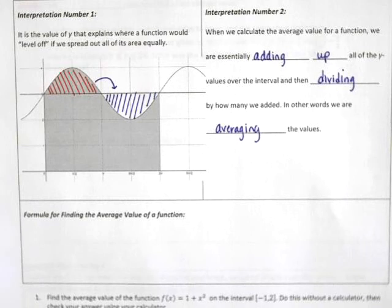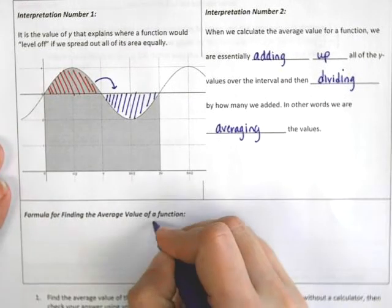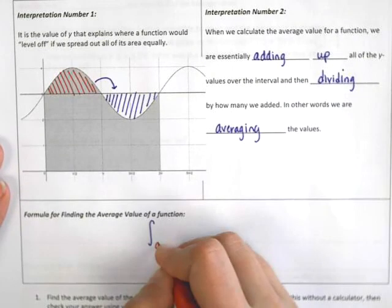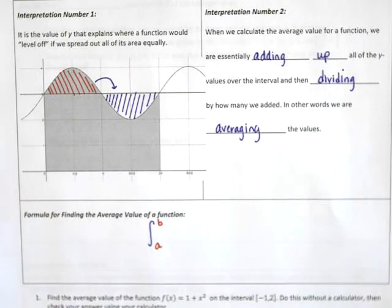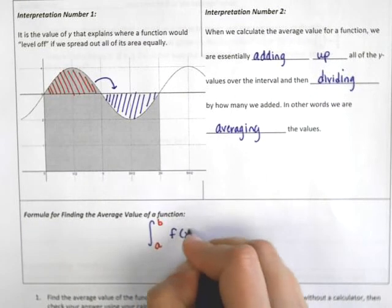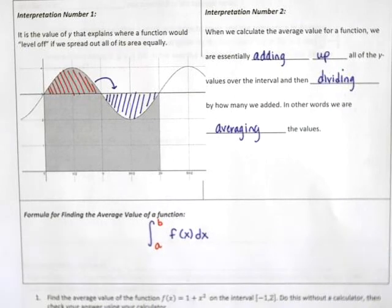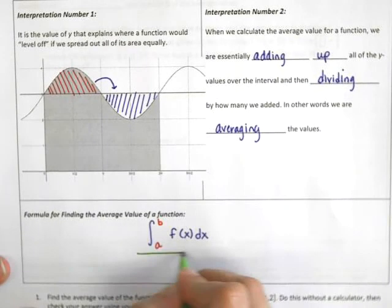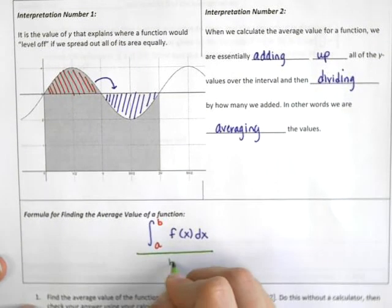The formula for finding average value looks like this. It's going to be the integral from a to b — in other words, your interval on the graph of your f(x) function. But in order to spread it out evenly over that interval, we have to divide by b minus a.